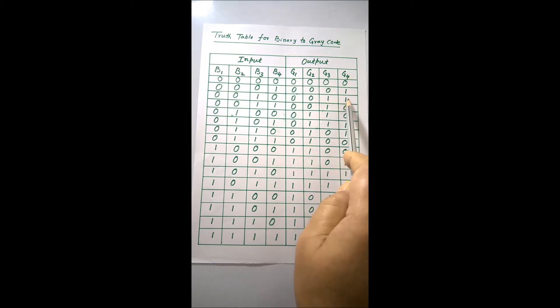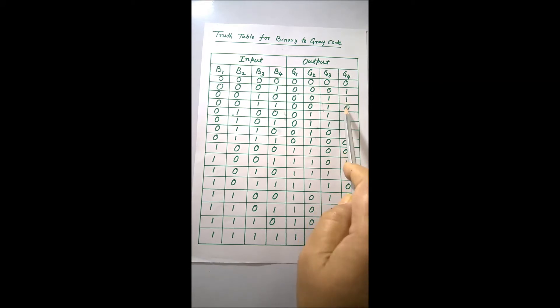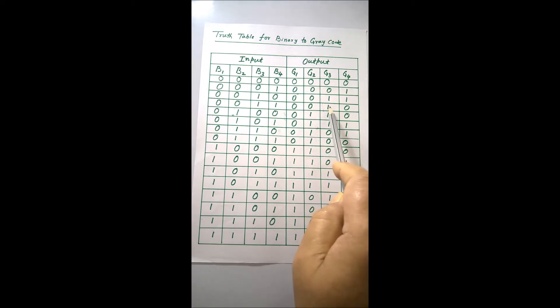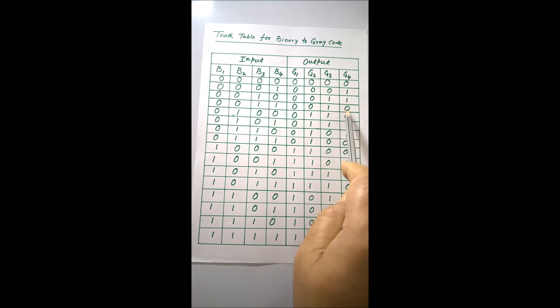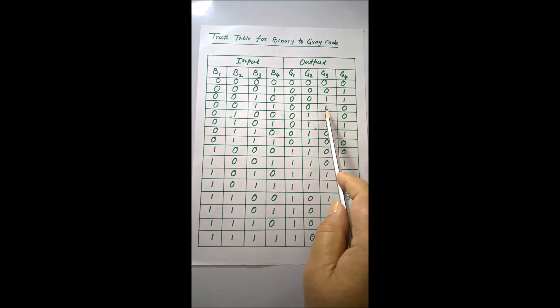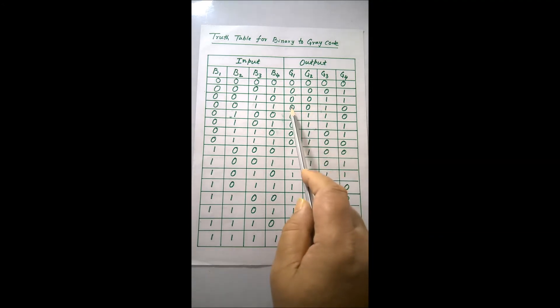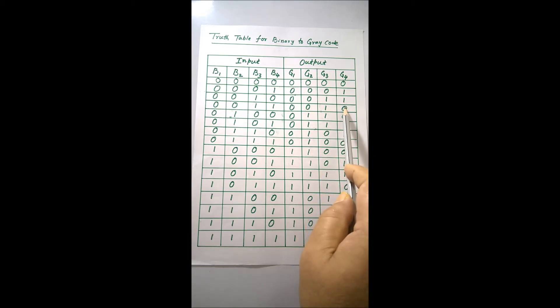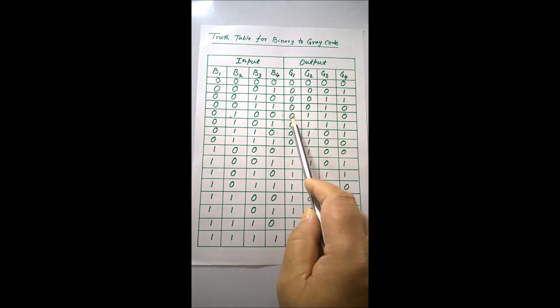To get the next number, again come to the least significant bit and complement it — that gives 0010 — which is not already existing, so it is accepted. The next number is 0010. Complementing the LSB again gives 0011, which already exists and is rejected. Moving to the next bit, complementing gives 0000, also existing and rejected. Moving to the next bit, complementing gives 0110, which is not existing and is accepted. Therefore, the next number is 0110.